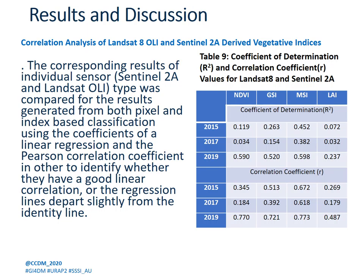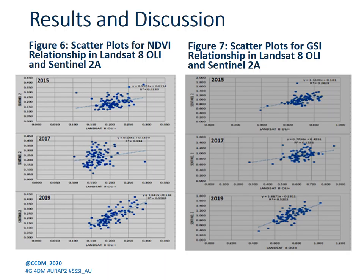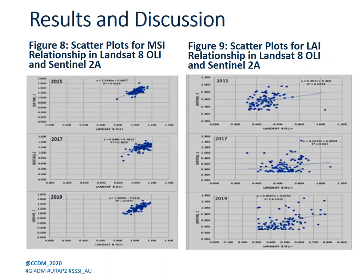A correlation analysis of Landsat-8 and Sentinel-2A derived vegetative indices was also performed. As seen in the table for NDVI, GCI, MSI, and LAI across the different years, the coefficient of determination and correlation coefficients are presented. The statistics show a not-too-strong relationship between the two sensors. Scatter plots between the two images are shown for NDVI, GCI, MSI, and Leaf Area Index.